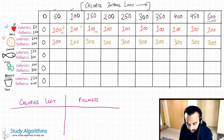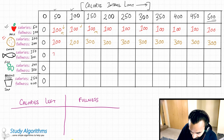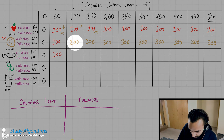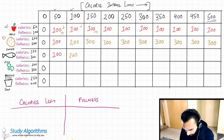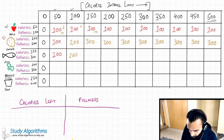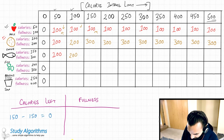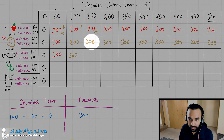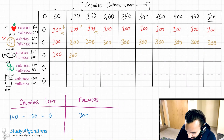Let us move ahead with three items: an apple, a cookie, and a fish. With only 50 calories, I can just have an apple, so I copy that value. With 100 calories, I still cannot eat the fish, so the value remains 200. With 150 calories and the fish now available, I eat the fish for 150 calories, have zero calories remaining, and get a fullness value of 300 — the same as before, so I copy it.